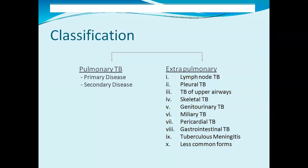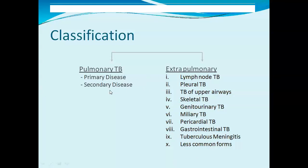Tuberculosis is classified into two main types. One is pulmonary tuberculosis, which is the primary and secondary disease limited to the lungs. Pulmonary tuberculosis means the infection is confined to the lungs. If the infection occurs in the lungs, it is called pulmonary tuberculosis.